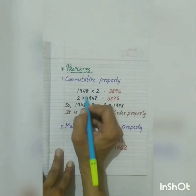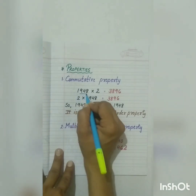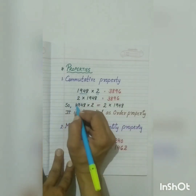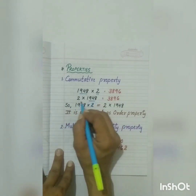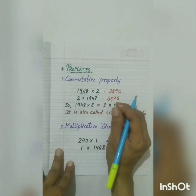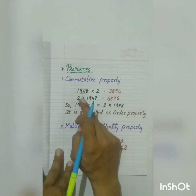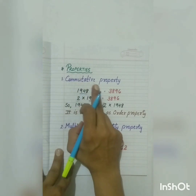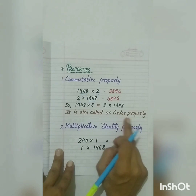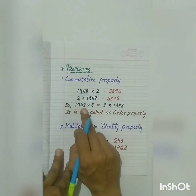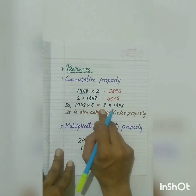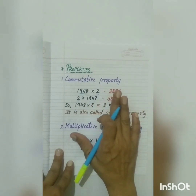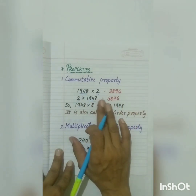Commutative property. As you can see, the product of 1948 multiplied by 2 is 3896, and the product of 2 multiplied by 1948 is also 3896. Which means even if I change the order of multiplicand and the multiplier, the product will be same. So this is called the commutative property. It is also called the order property, where 1948 multiplied by 2 is equal to 2 multiplied by 1948. This is applicable with all numbers — we can change any order at any place.